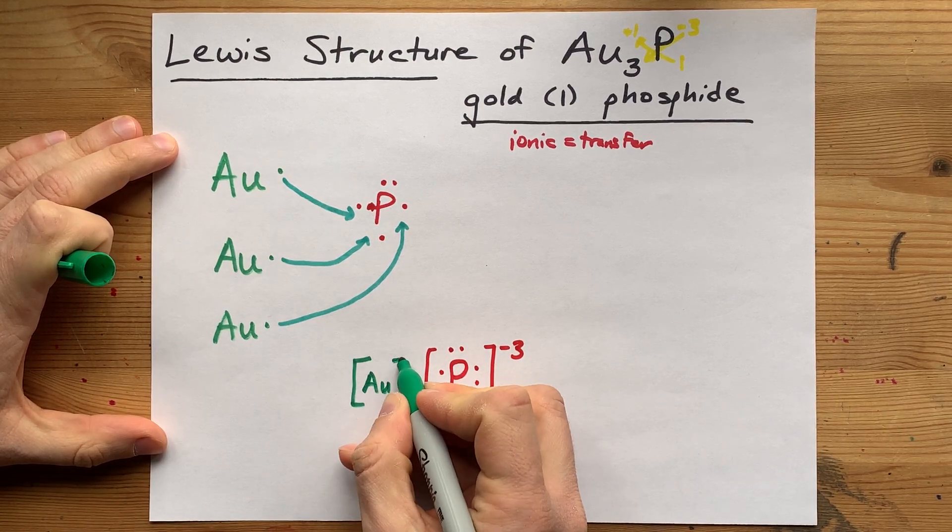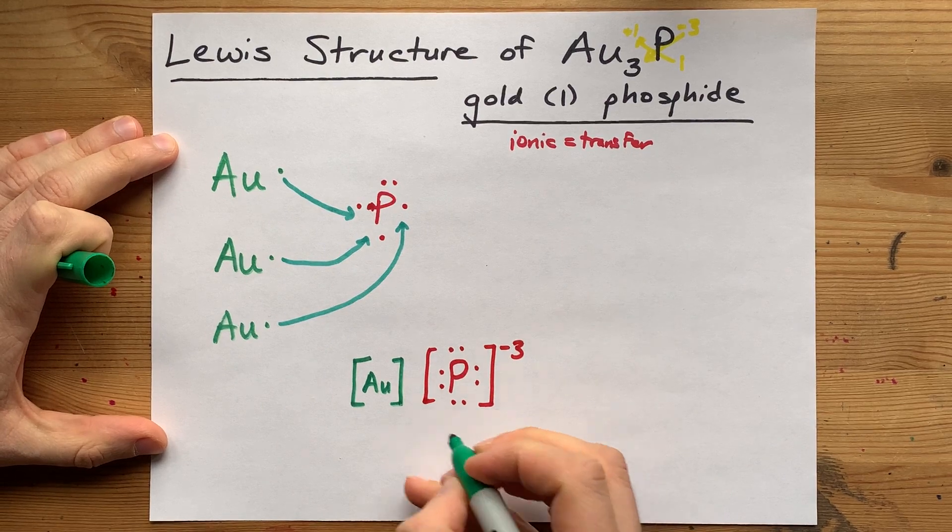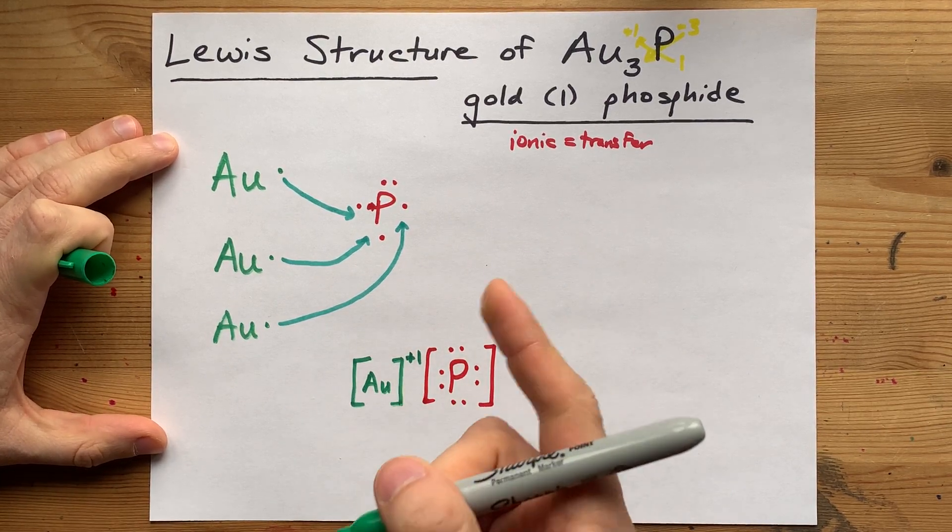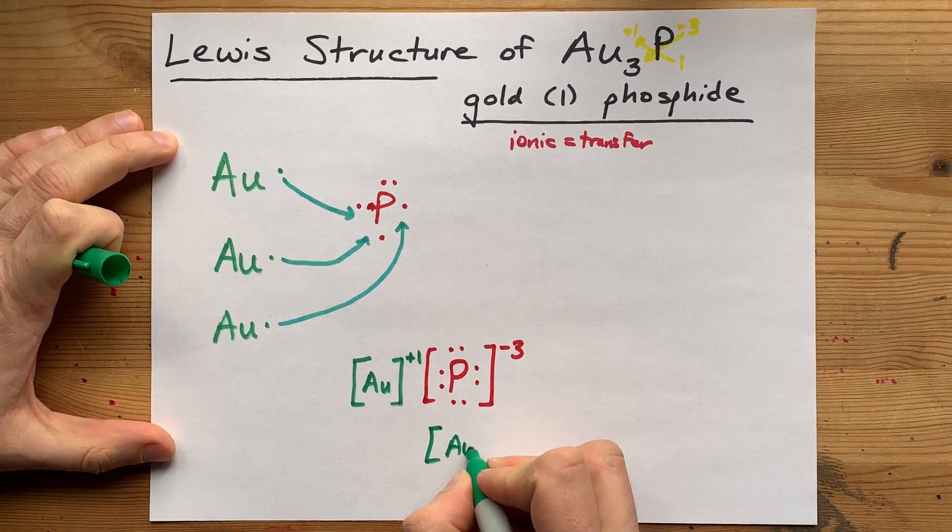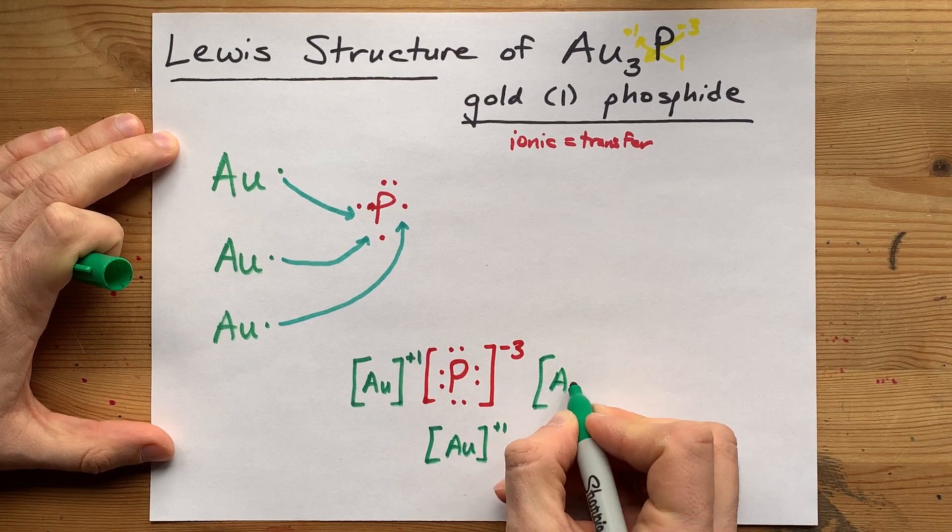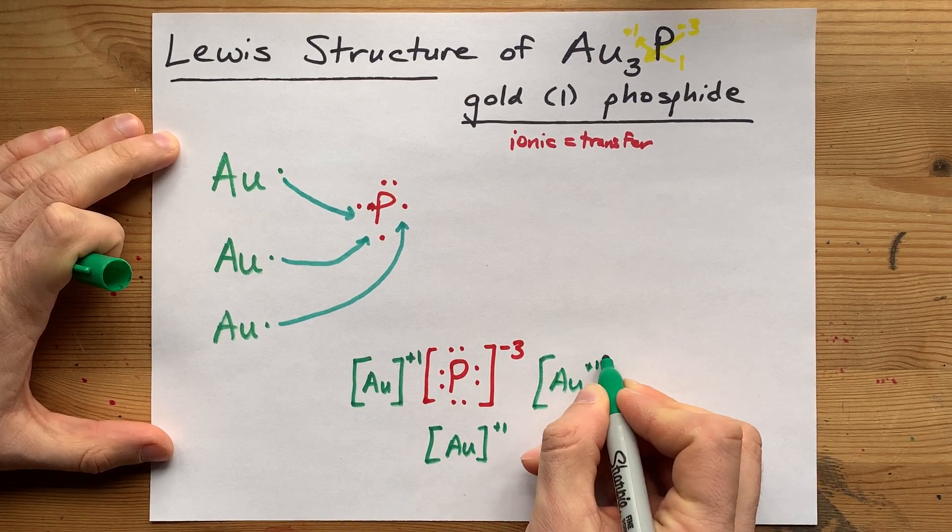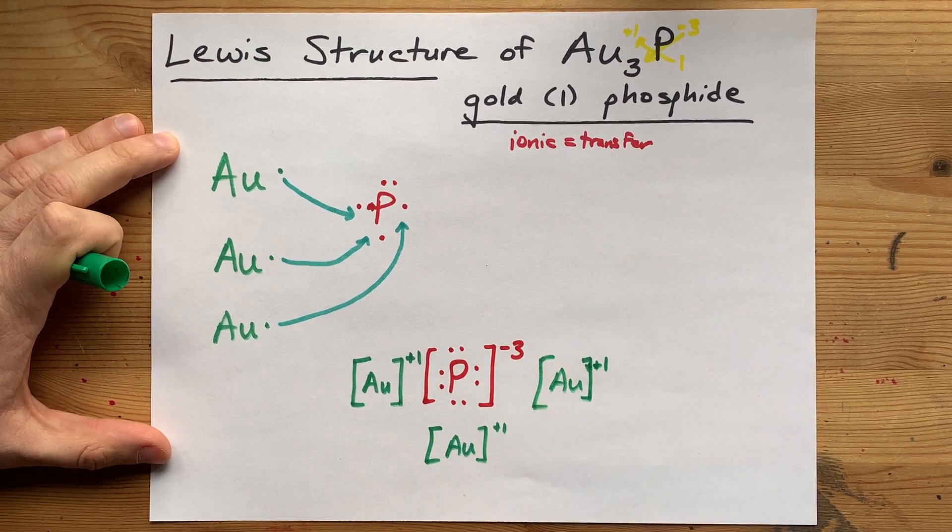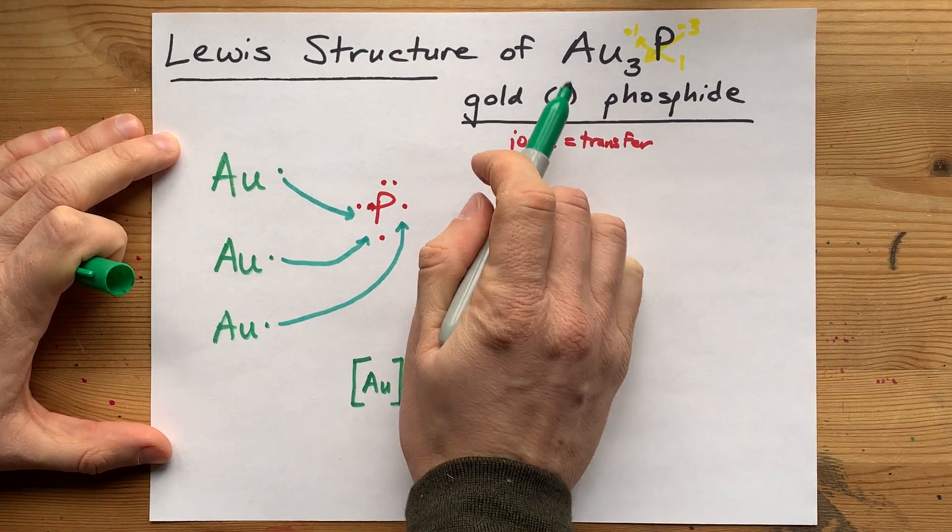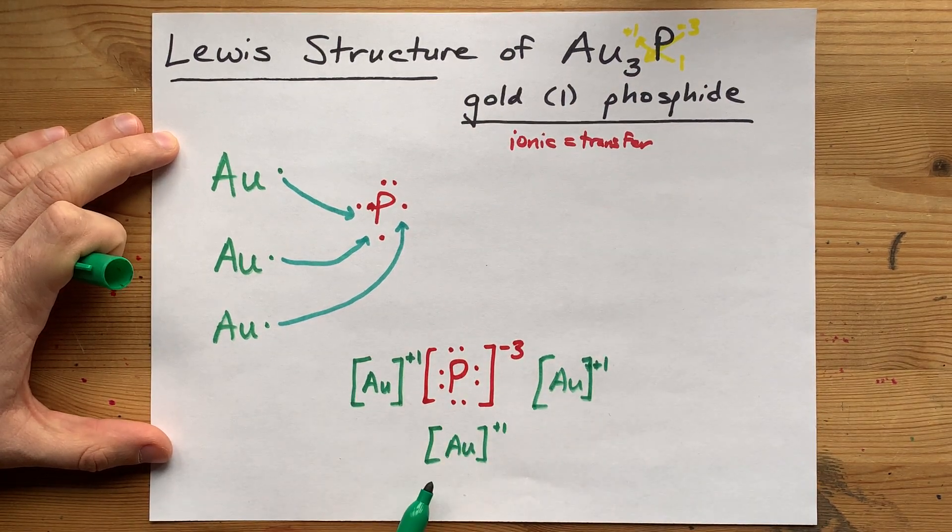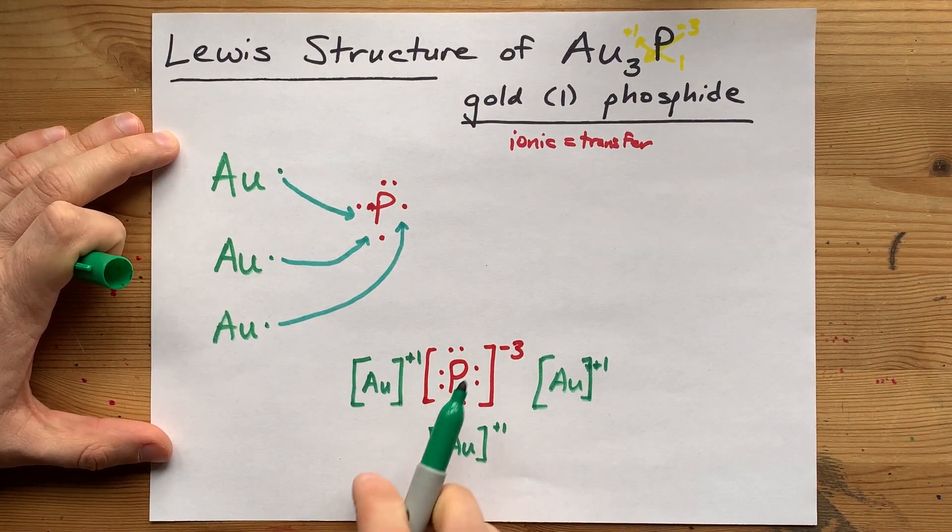So, draw the Au with no electrons around it. And it's a plus 1 charge for each of them, because it's missing 1 electron each. Now, you're going to have to draw that 3 times, because you needed 3 of these golds to satisfy the octet that was on phosphorus. But that's also why the formula is Au3P. 1, 2, 3 golds needed to complete the octet on 1 phosphorus.